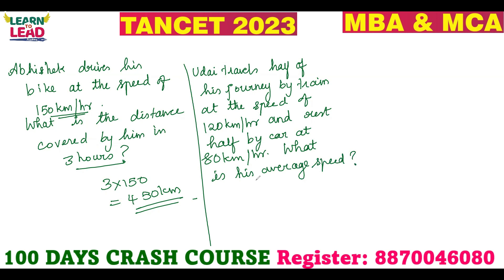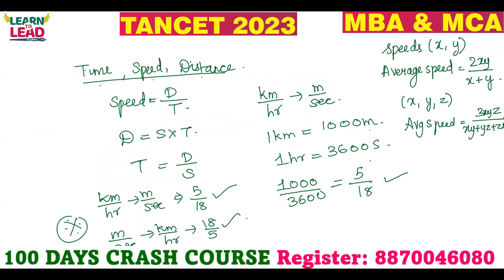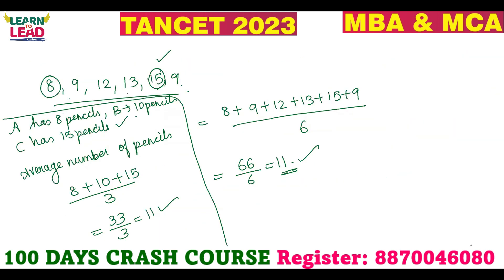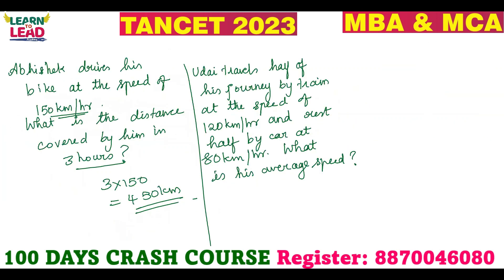Average speed is not the average of two speeds. You should know one concept. When it comes to average speed, average speed is not the average of the two given numbers. I will tell you why.